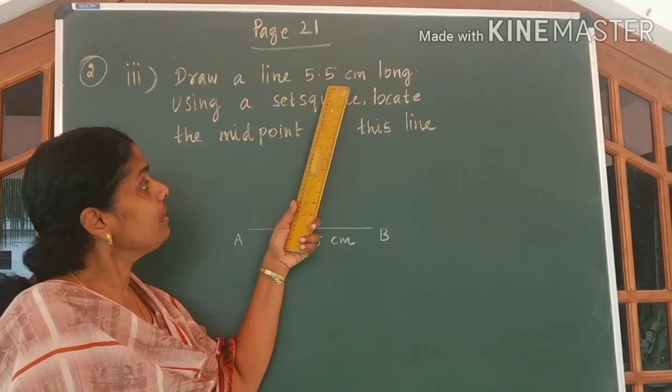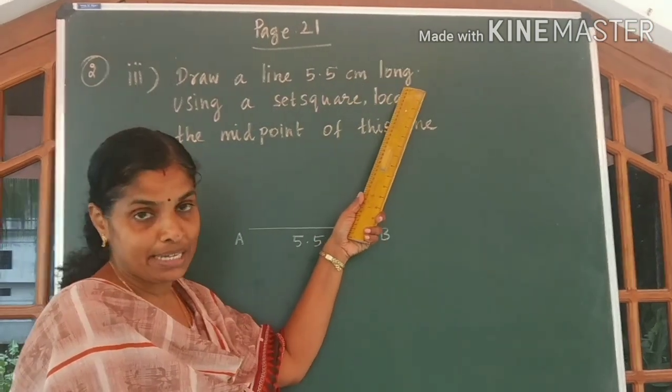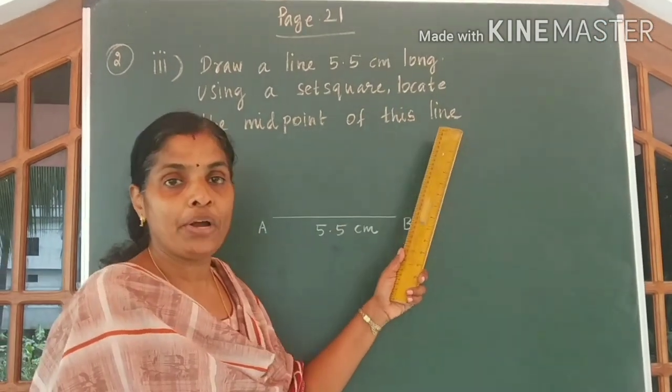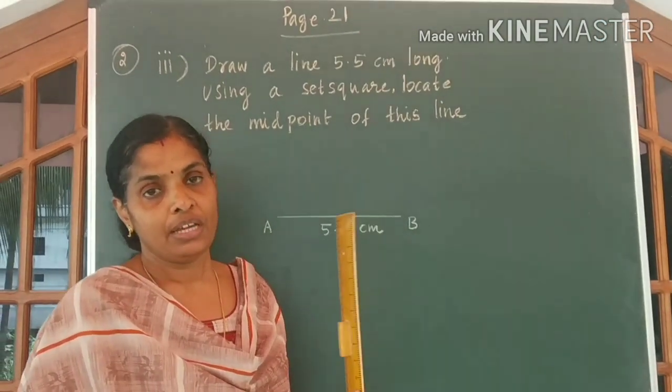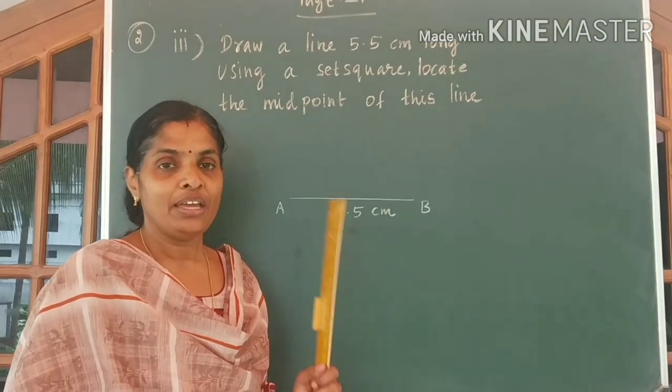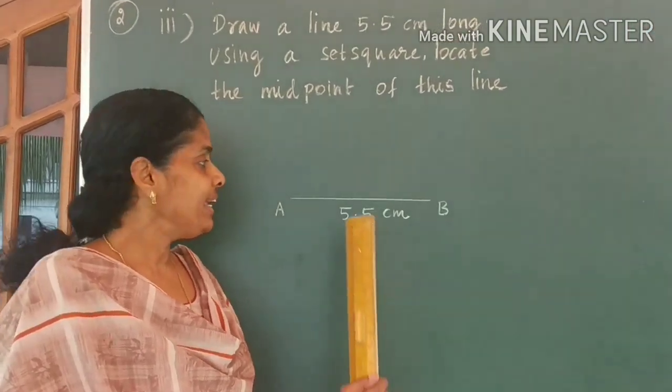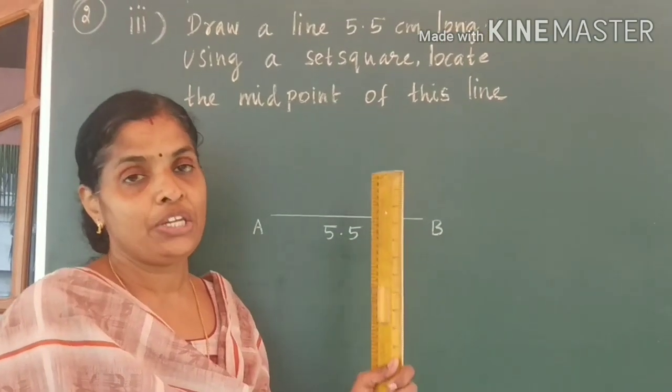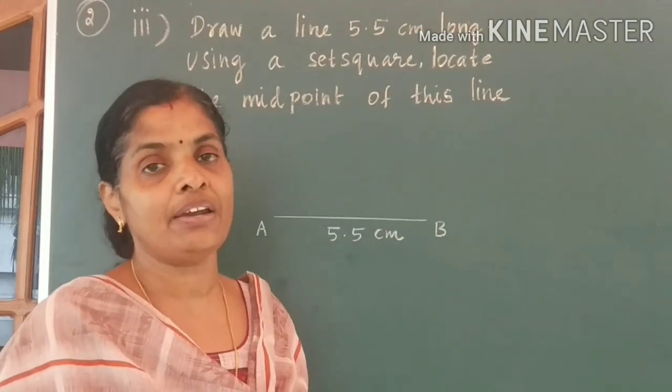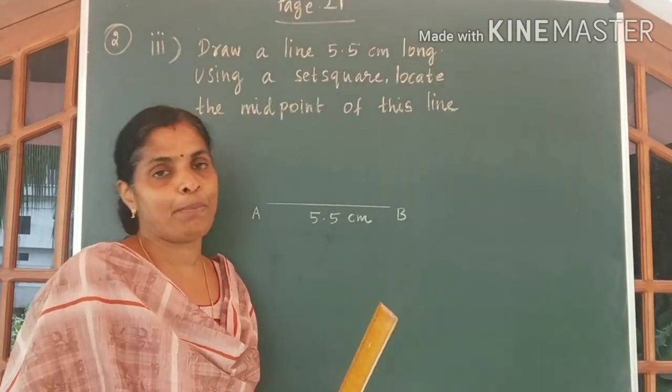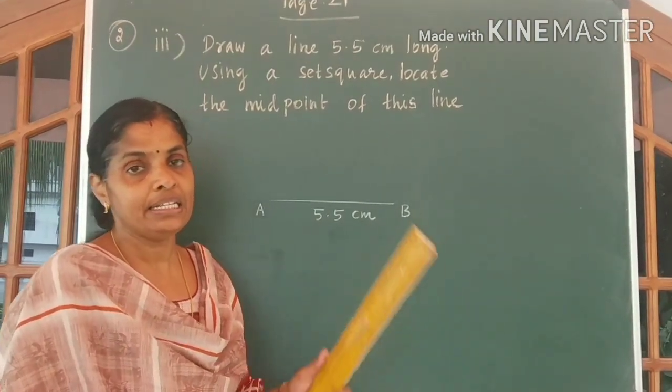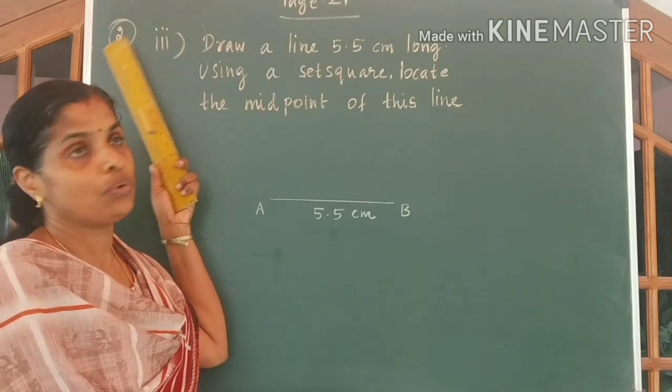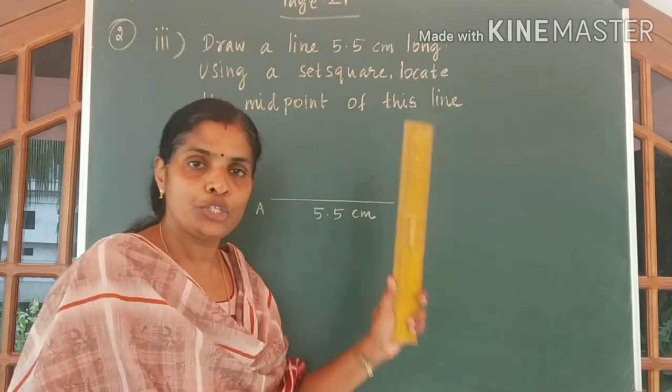Draw a line 5.5 cm long. Using a set square, locate the midpoint of this line. Is the question clear? We are asked to draw a line for 5.5 cm and using a set square, we are going to find the midpoint. This is the 3rd sub-question of question number 2 in page number 21.